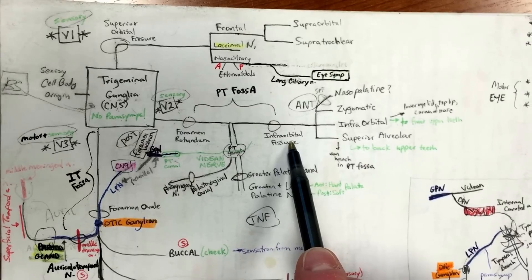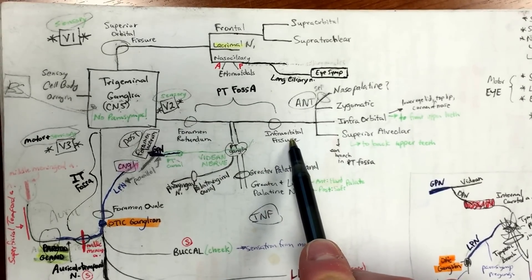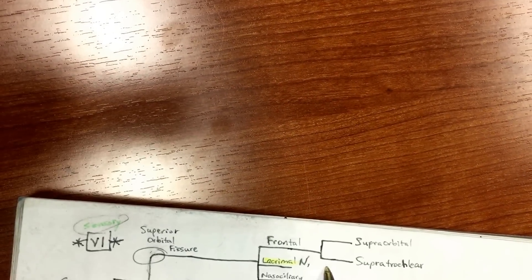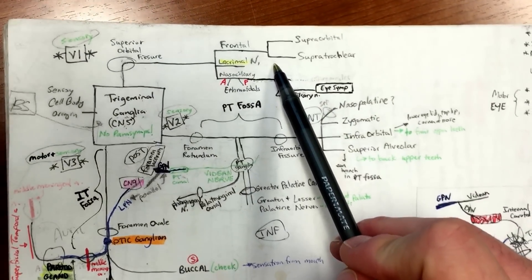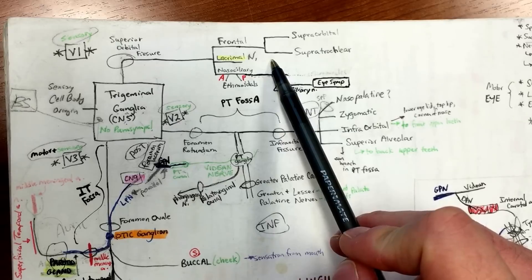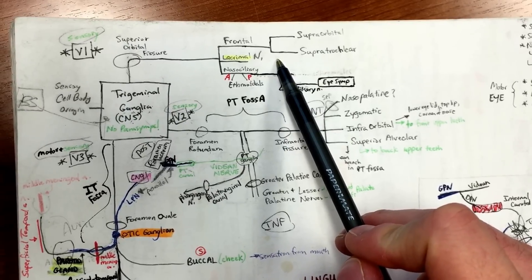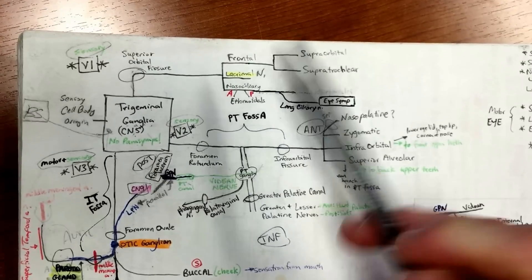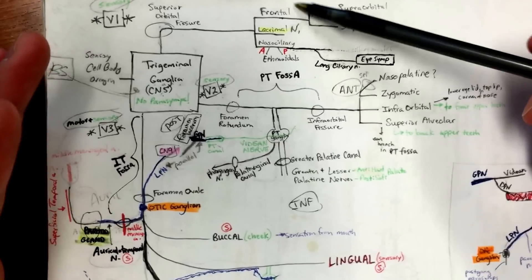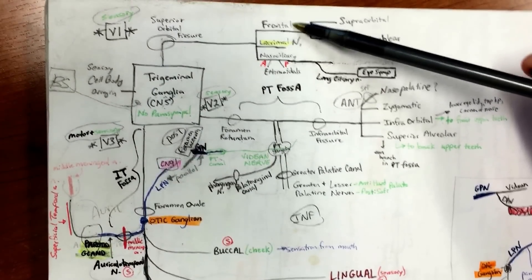One thing to keep in mind here is the big picture. V1 covers which part of the face? The upper eye, right? And it's also called the ophthalmic nerve, so ophthalmic equals eye. If you keep the big picture in mind, this is the top of the head, so you have the frontal muscle up there, the lacrimal of the eye.